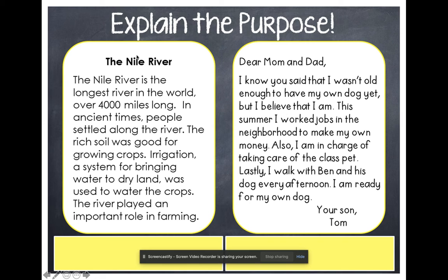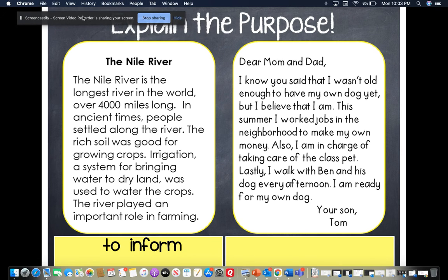Now let's look at these passages. 'The Nile River is the longest river in the world. It's over 4,000 miles long. In ancient times, people settled along the river. The rich soil was good for growing crops. Irrigation, a system for bringing water to dry land, was used to water the crops. The river played an important role in farming.' This one is meant to inform. We know that because it's telling us true facts about the Nile River — it is non-fiction.